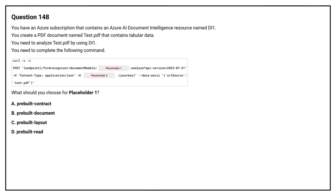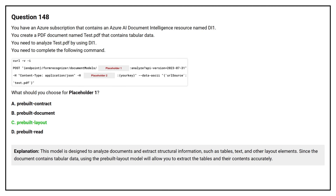Option A, prebuilt contract. Option B, prebuilt document. Option C, pre-built layout. Option D, pre-built read. The correct answer is option C, pre-built layout. This model is designed to analyze documents and extract structural information such as tables, text, and other layout elements. Since the document contains tabular data, using the pre-built layout model will allow you to extract the tables and their content accurately.